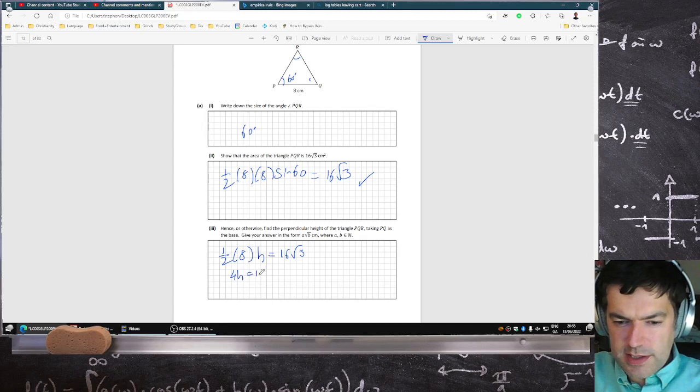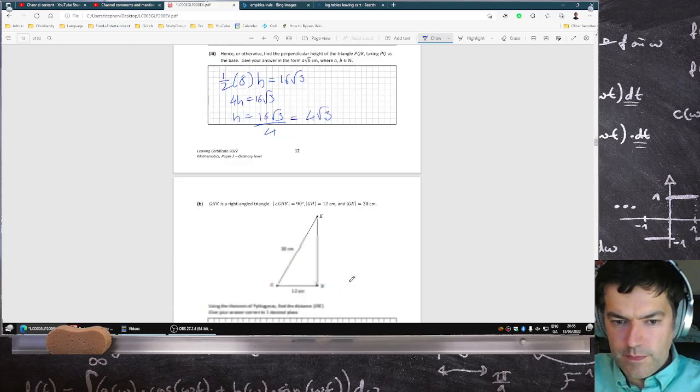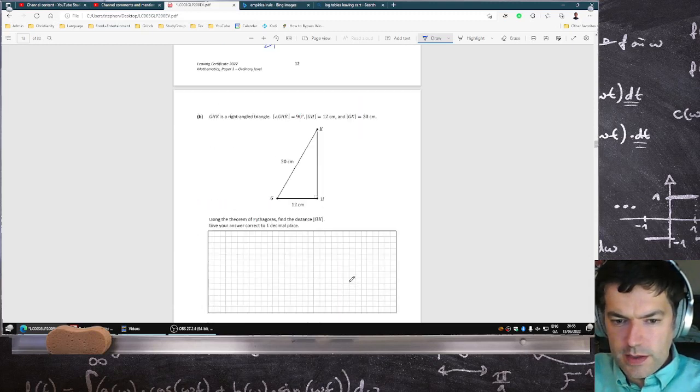So that means 4h is equal to 16 root 3, so h is 16 root 3 over 4. Divide above and below by 4 and you're left with 4 root 3. Use Pythagoras to find the distance hk, so that's 12 squared...